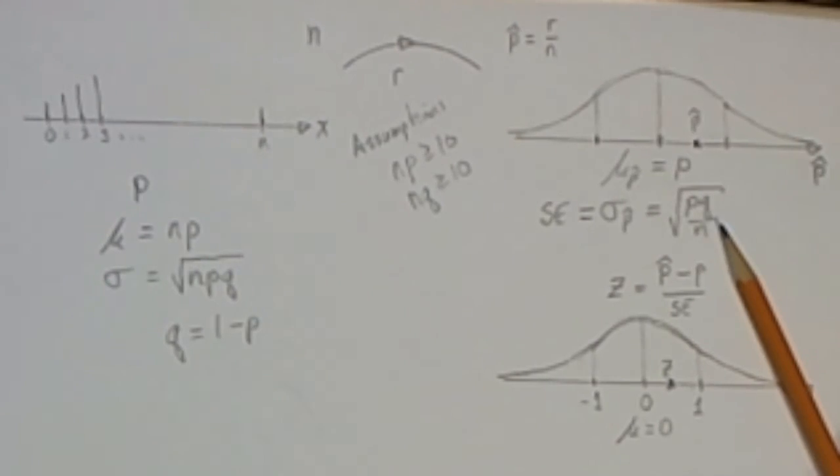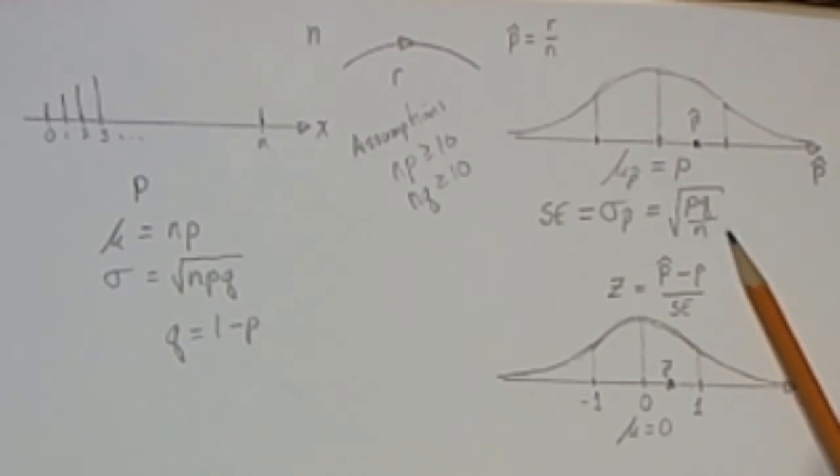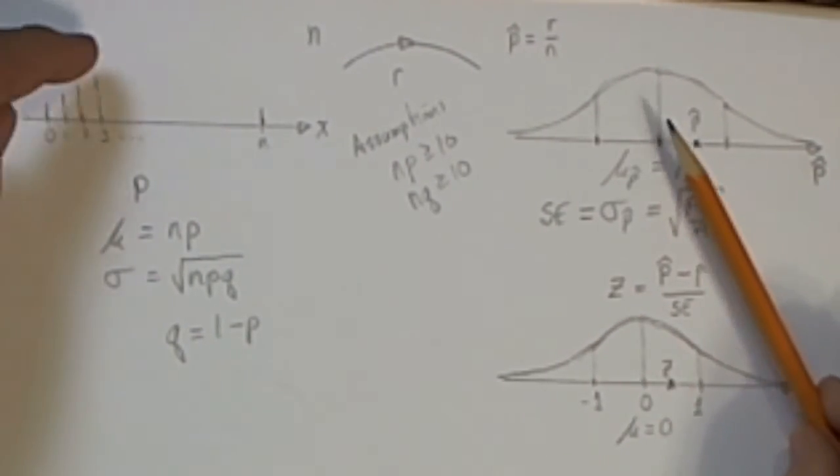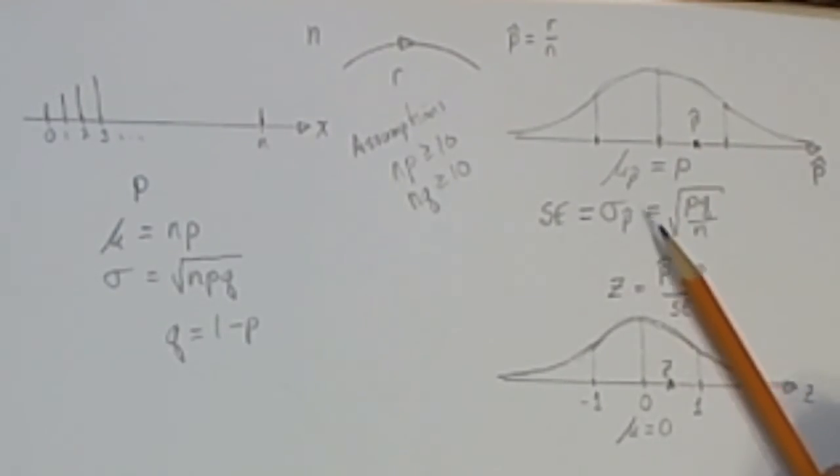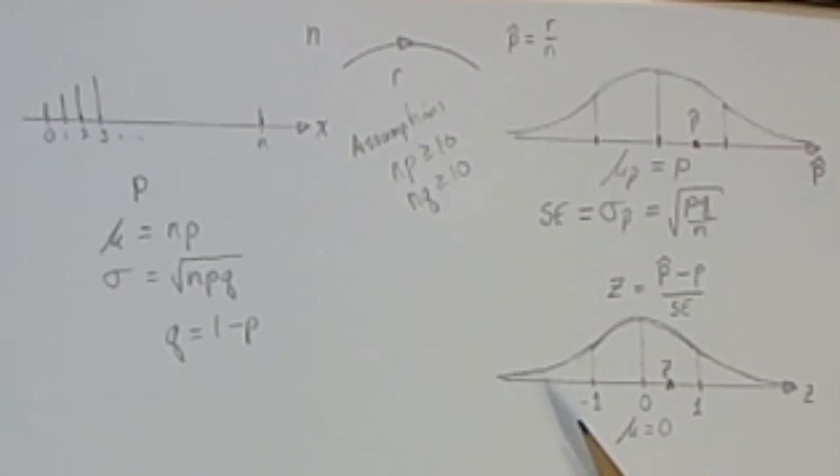For convenience, we're going to call the standard deviation of this distribution of sample means a standard error, because we've got several standard deviations. So it's nice to call this special one in this distribution a standard error. That's just converting p-hat to a z-score. This is the three distribution diagram for a proportion.